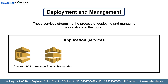Next, we have Amazon Elastic Transcoder. Amazon Elastic Transcoder is a media transcoding service in the cloud. It is designed to be a highly scalable, easy to use and cost effective way for developers and businesses to convert media files from their source format into versions that will play back on devices like smartphones, tablets and PCs. And then we have Amazon SES, which stands for Simple Email Service. Amazon SES is a cloud-based email sending service designed to help digital marketers and application developers send marketing, notifications and transactional emails.